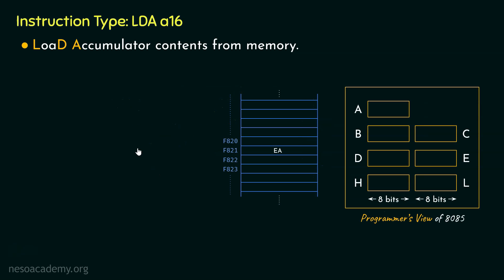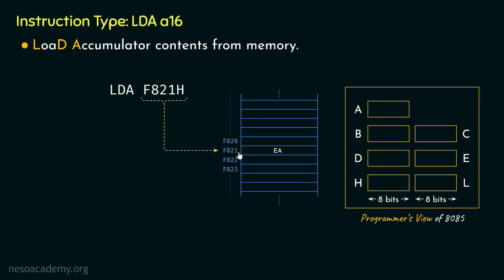Now let me illustrate how this will help us. Say within the memory location F821 we have the hexadecimal content EA — and you already know this notation in hexadecimal is used for ease of human readability; within the memory location this data is stored as binary. We would like to load this inside the accumulator. If we execute the instruction LDA F821, since we are sending the address directly to the microprocessor through the instruction, using this address the microprocessor will be able to directly point to the memory location, and once the instruction is executed the contents within that memory location will be loaded into the accumulator register.